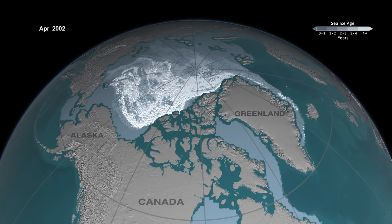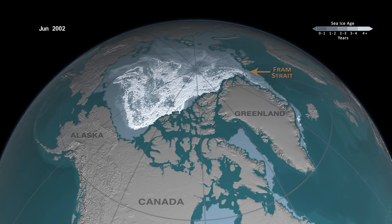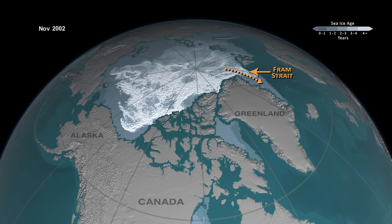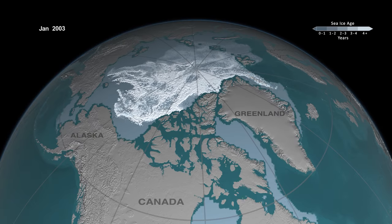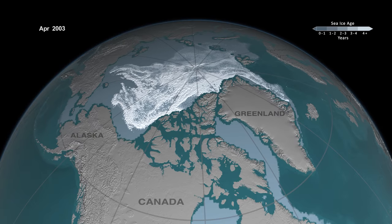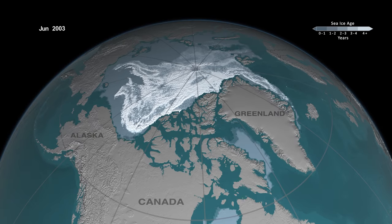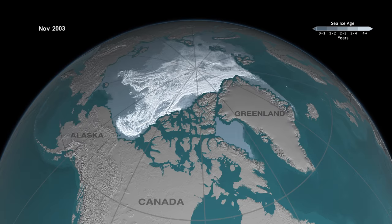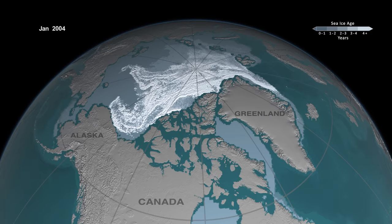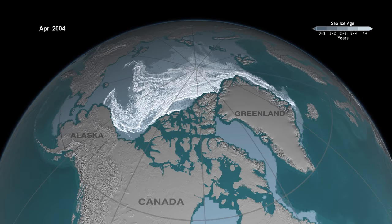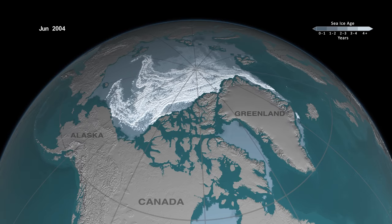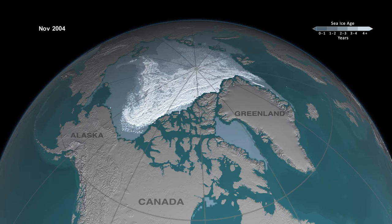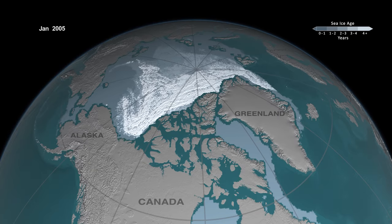Eventually, the ice will spin out of that gyre and go out through Fram Strait. In the past, we've always had enough ice growth and ice aging — enough ice surviving the summers — to replenish the older ice that's lost.